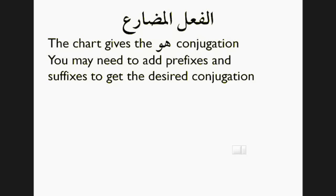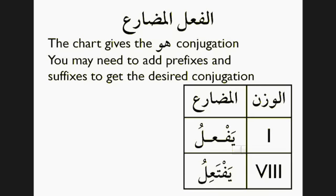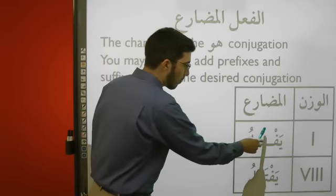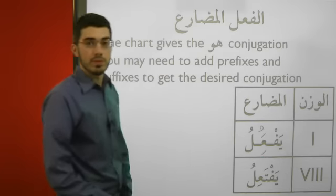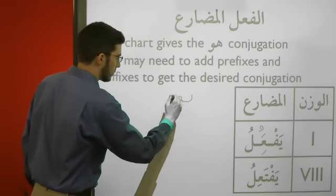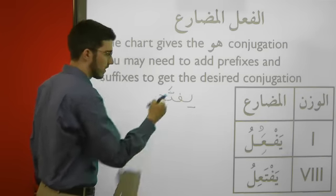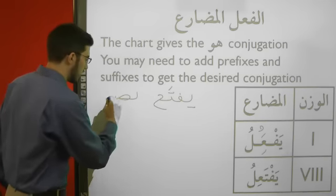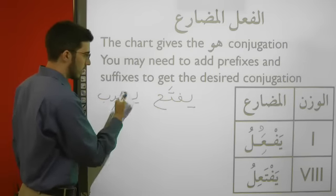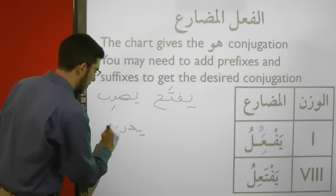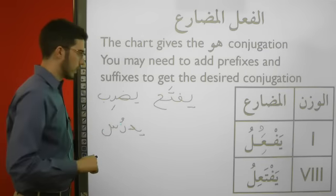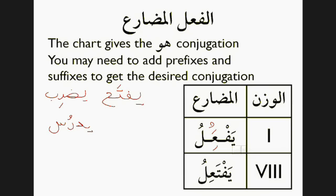Let's go ahead and take a look at the table — I have a zoom in right here. Notice we have the wazan and the mudari' for form one and form eight. Notice I've left out the vowels on the ayn here — because these letters are still wild cards and all possible vowels appear on the ayn in the Arabic language. For example, we have the verb yaftahu meaning he opens, which has a fatha on the ayn letter; yadribu meaning he hits, which has a kasra; and yadrusu meaning he studies, which has a dhamma on the ayn letter. So in Arabic we have all three possibilities — hence why in your chart you have a fatha, a dhamma, and a kasra.